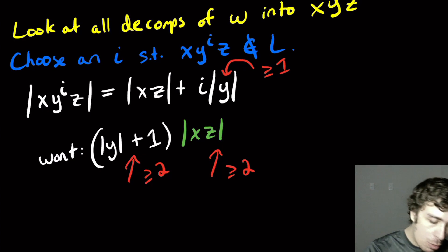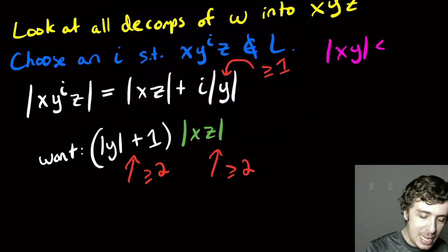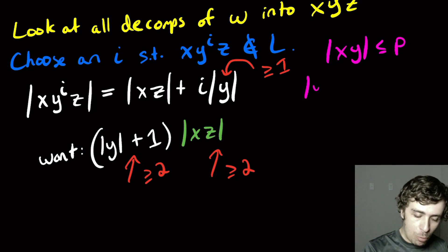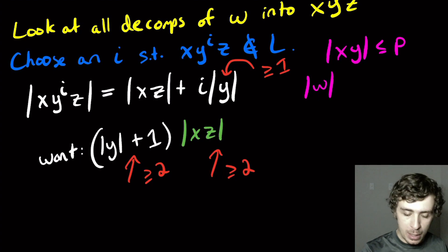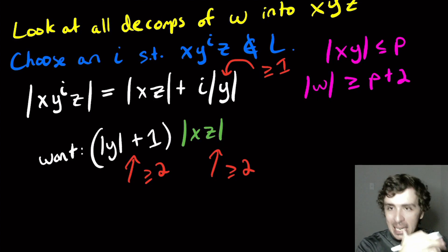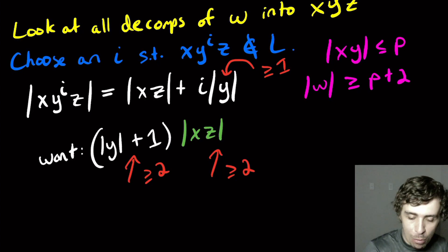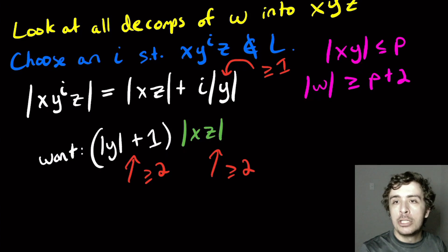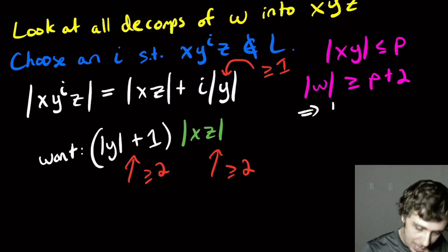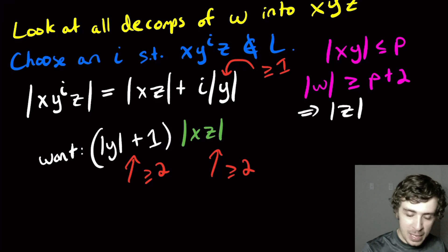We know that the pumping lemma condition says that the length of xy is at most P. The length of W is at least P plus two. So that implies that the length of z itself is at least two.